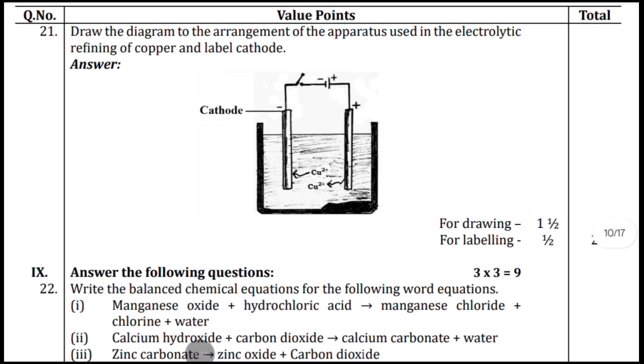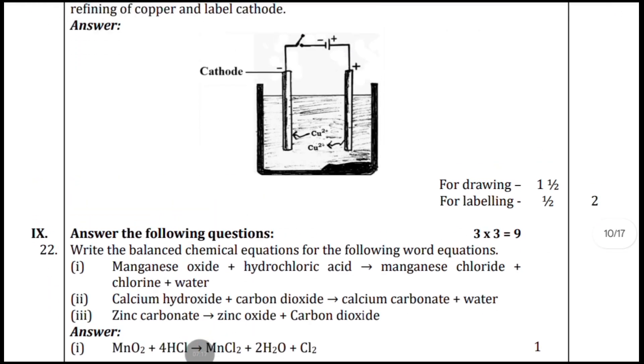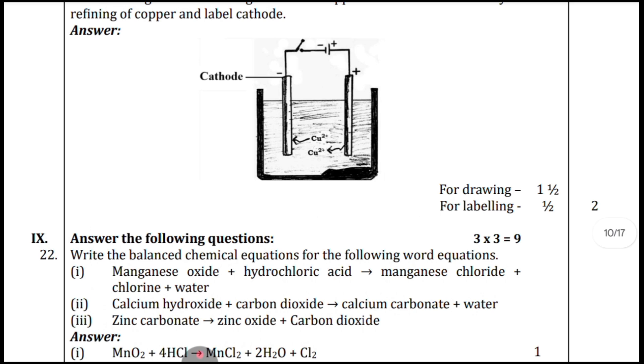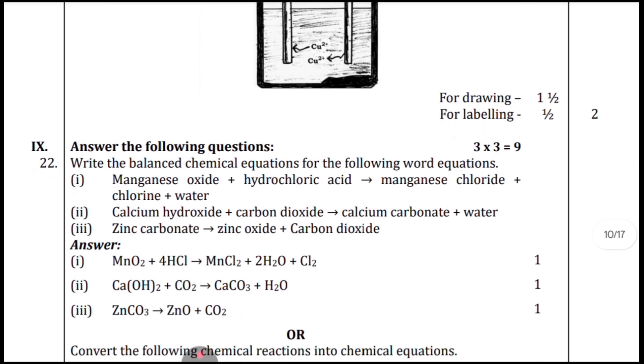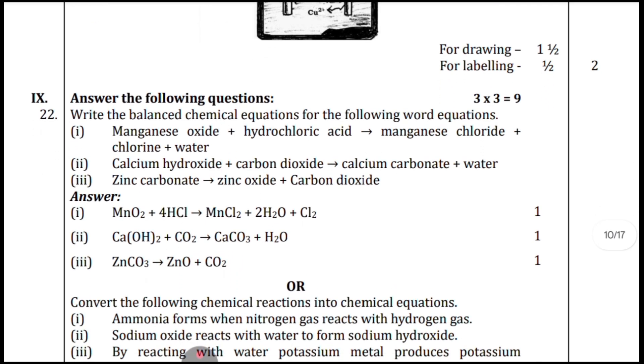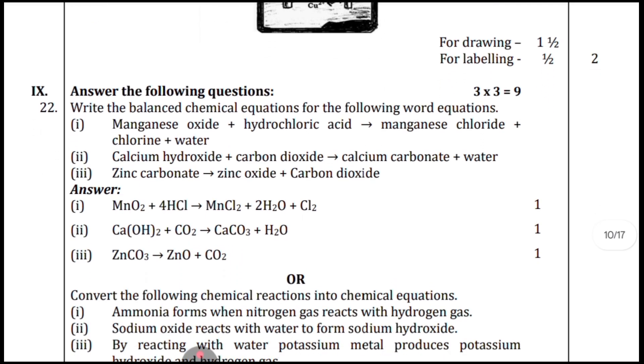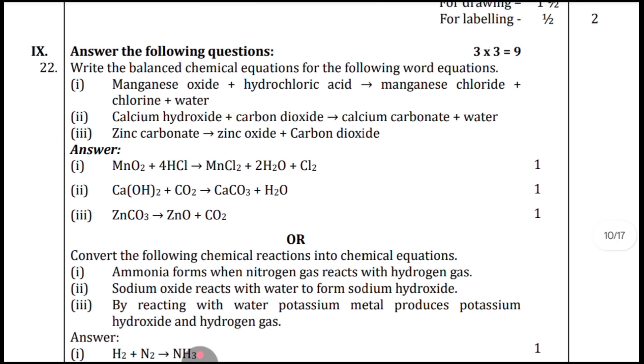Question twenty-one: draw the diagram of the apparatus used for electrolytic refining of copper and label the cathode. For drawing: one and a half marks; for labeling: half a mark. You can see the marks distribution on the right-hand side.